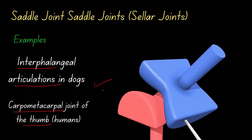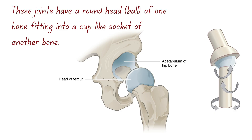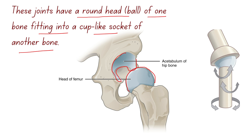The multiaxial joint, also known as the ball-and-socket joint, is a type of synovial joint that allows movement in multiple directions. It has a rounded head (ball) of one bone fitting into a cup-like socket of another bone, as you can see here — the rounded end fits into the socket of the other bone.